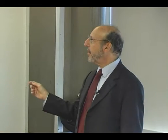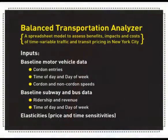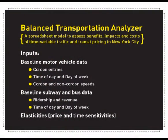These are some of the inputs — there are actually many others — but the key ones are: baseline motor vehicle data, the amount of vehicles driving into the cordon, the time of day and day of week, vehicle speeds, and baseline subway and bus ridership and revenue by time of day and day of week. Equally important are what we call price elasticities — the responsiveness of drivers and transit users to the cost and efficiency of transit and driving.